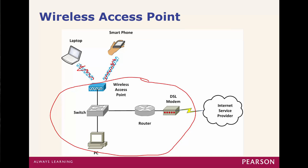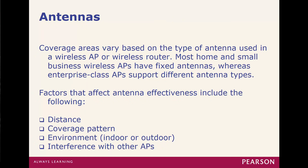How do laptops and other devices connect to that access point? They do so via an antenna. The coverage area varies widely based on the antenna being used. Factors that can affect the antenna include its distance, its pattern, its environment, interference with other access points, and its interface with the current access point.